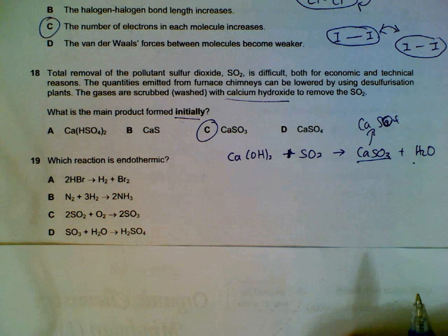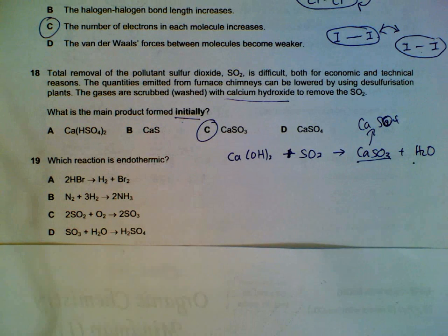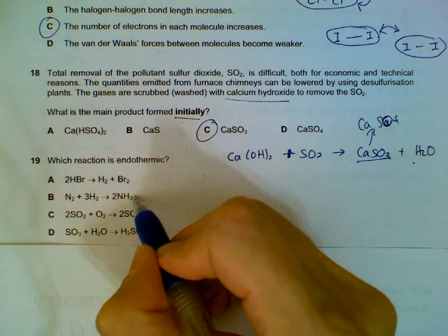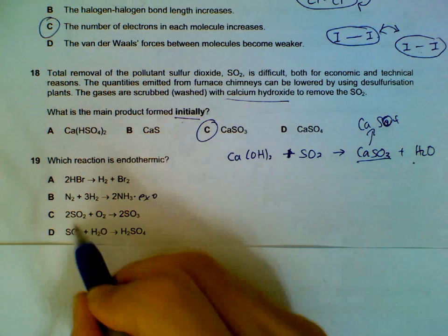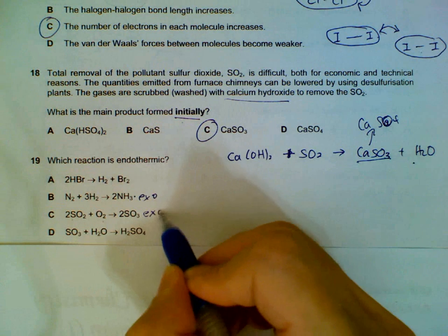Question 19. Which reaction is endothermic? You can do this by recollection and elimination. This is Haber process, it's exo. This is the combustion. Oxidation of sulfur dioxide, it's exo.